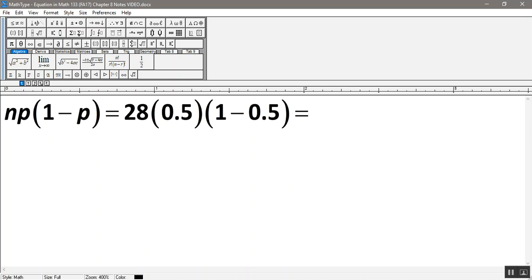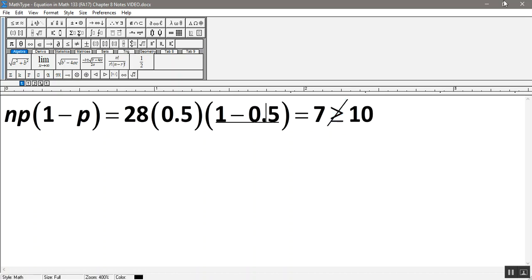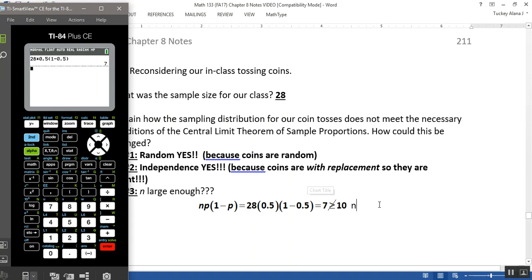So this is equal to 7 for me, but 7 is not bigger than 10. So I wanted this to be greater than or equal to, greater than or equal to 10, and I don't have it. So I want to put a big slash through it. A slash through a sign means you don't have it, where it's not greater than or equal to 10. And so, therefore, N is not large enough.